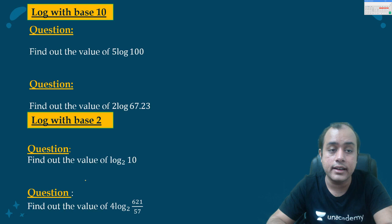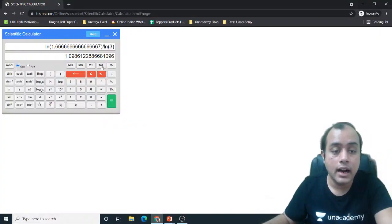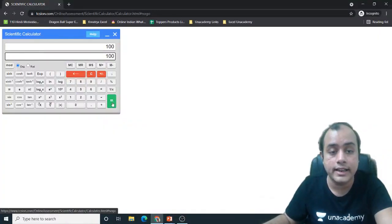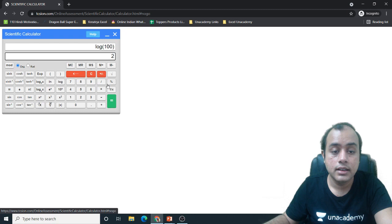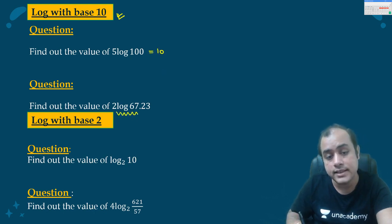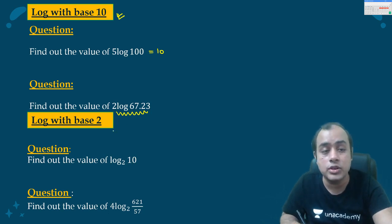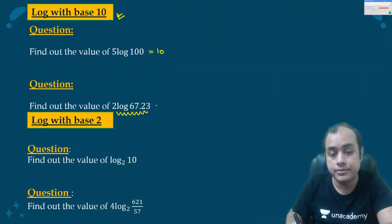Now we need 5 log 100 on a base of 10. Very simple. Again follow the same process. First 100 you will enter, then you will press this log log 1. Now you will multiply it by 5. See it is 10. Very simple. It is coming out to be 10. What about 2 log 67.23? Now that you have understood the process, it is very simple. 67.23 log into 2. 3.6551.